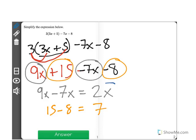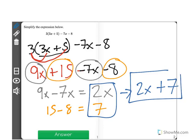Now we take these two and combine them to get 2x and positive 7 is plus 7 for the simplified version of this expression.